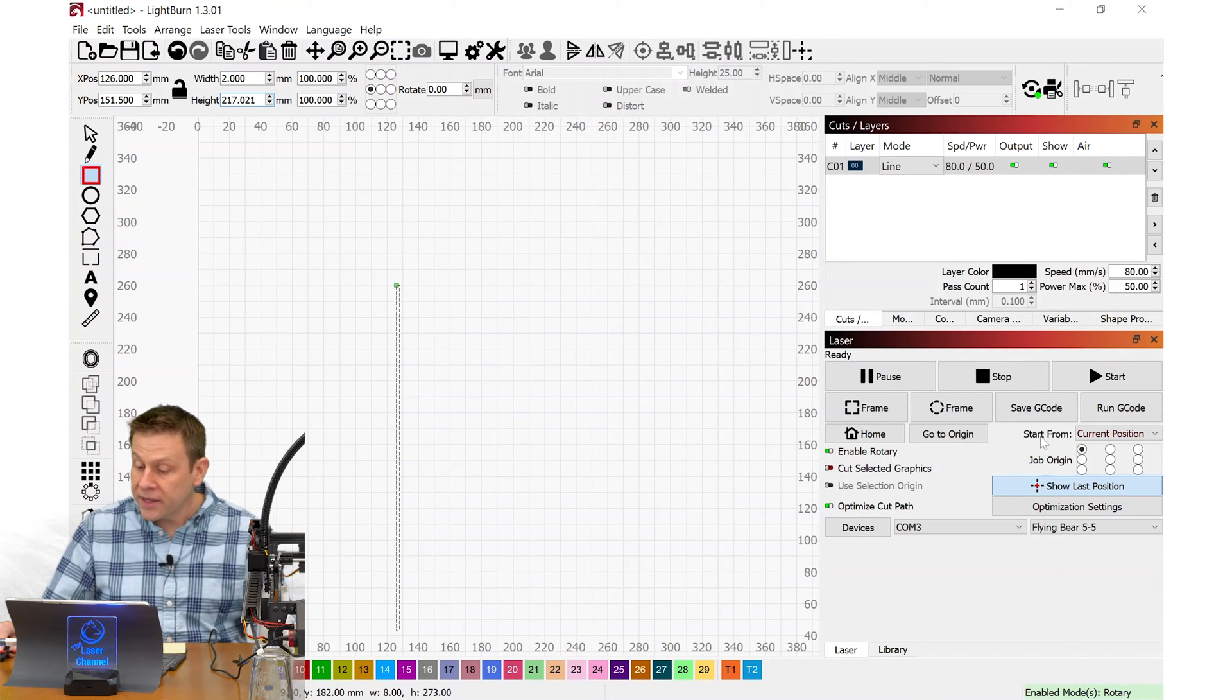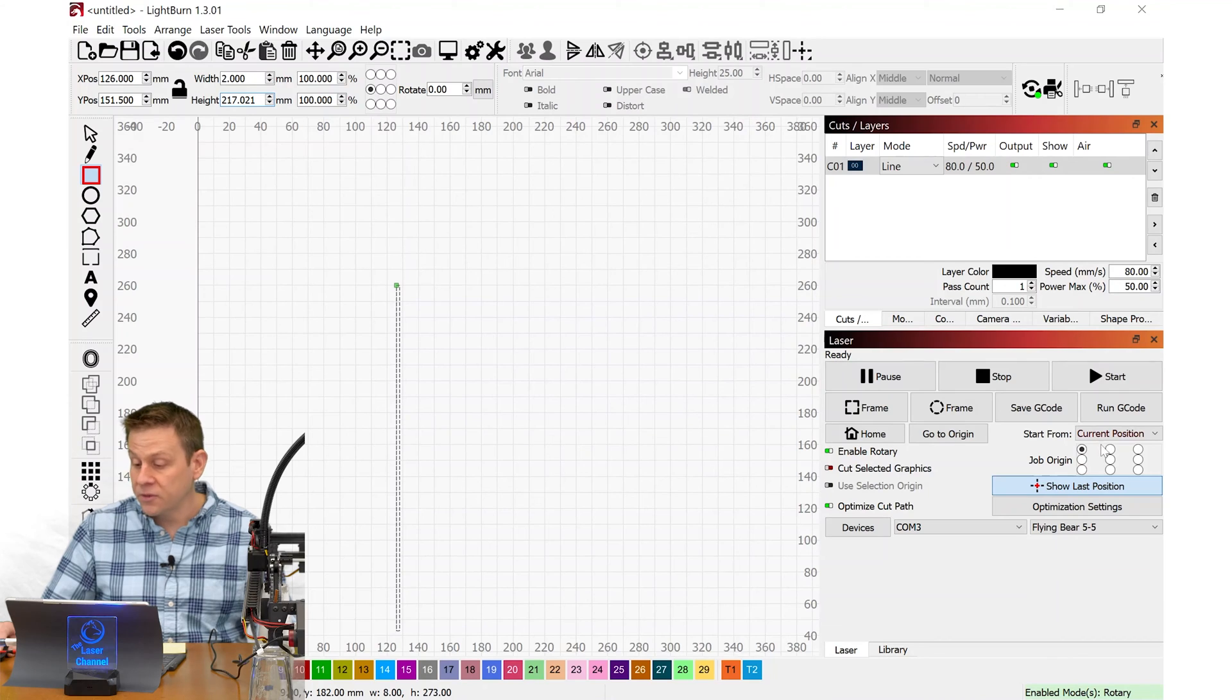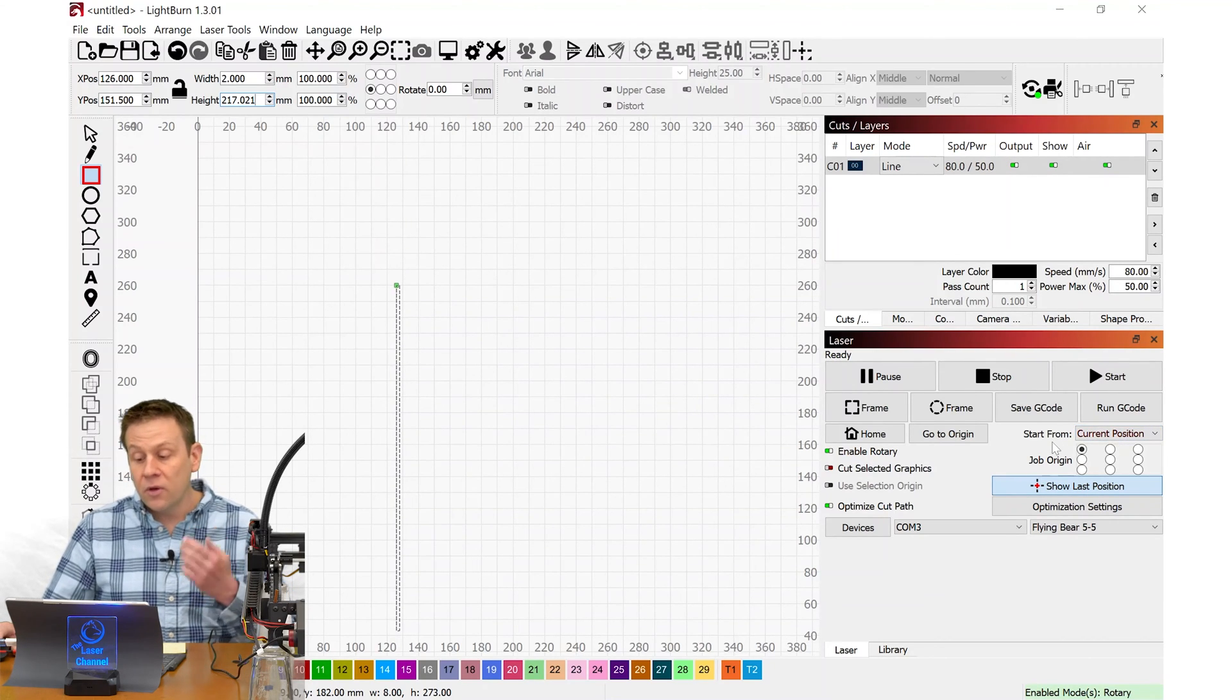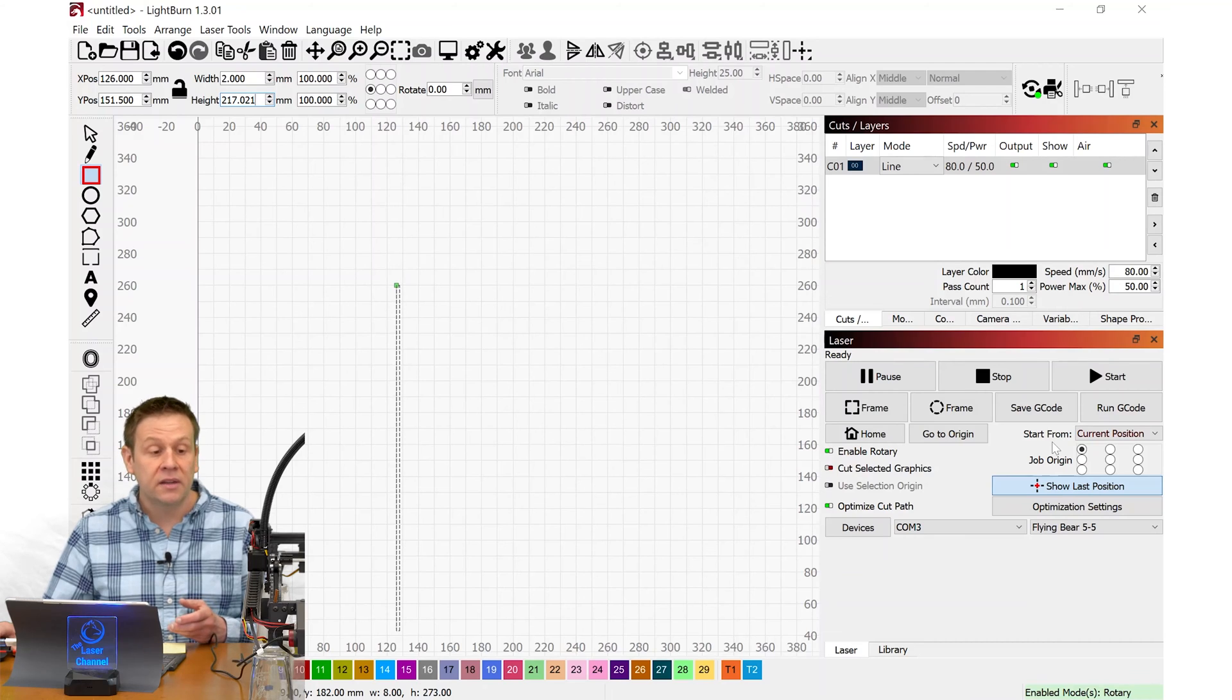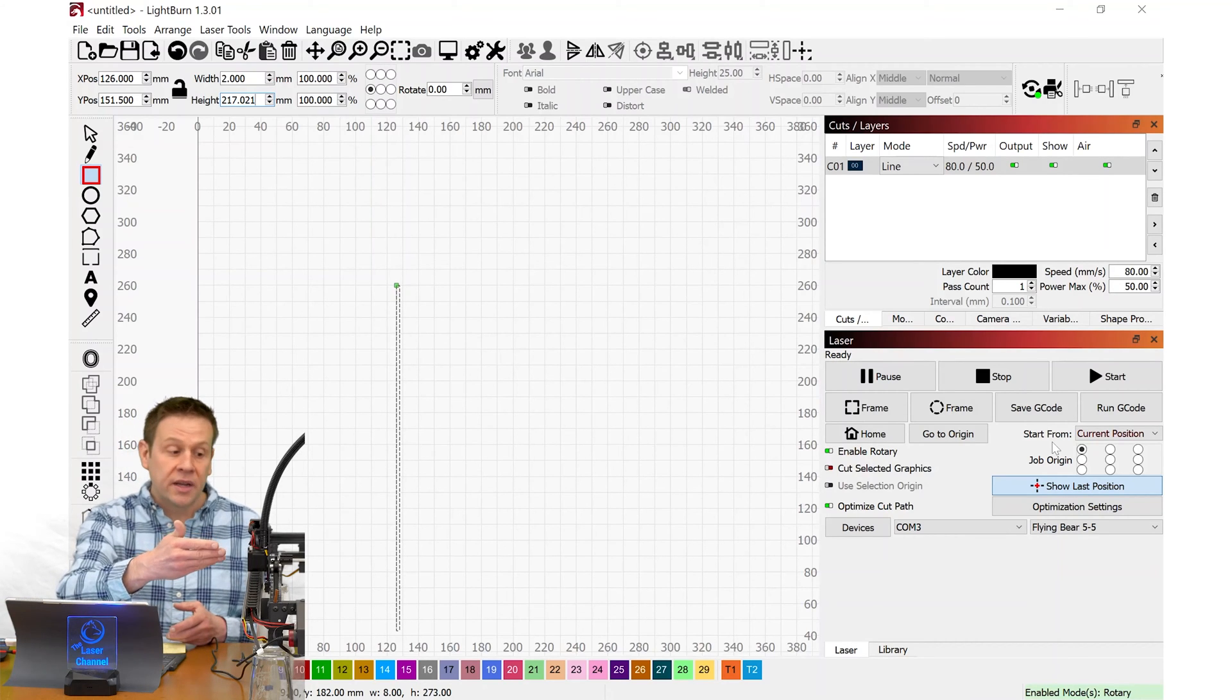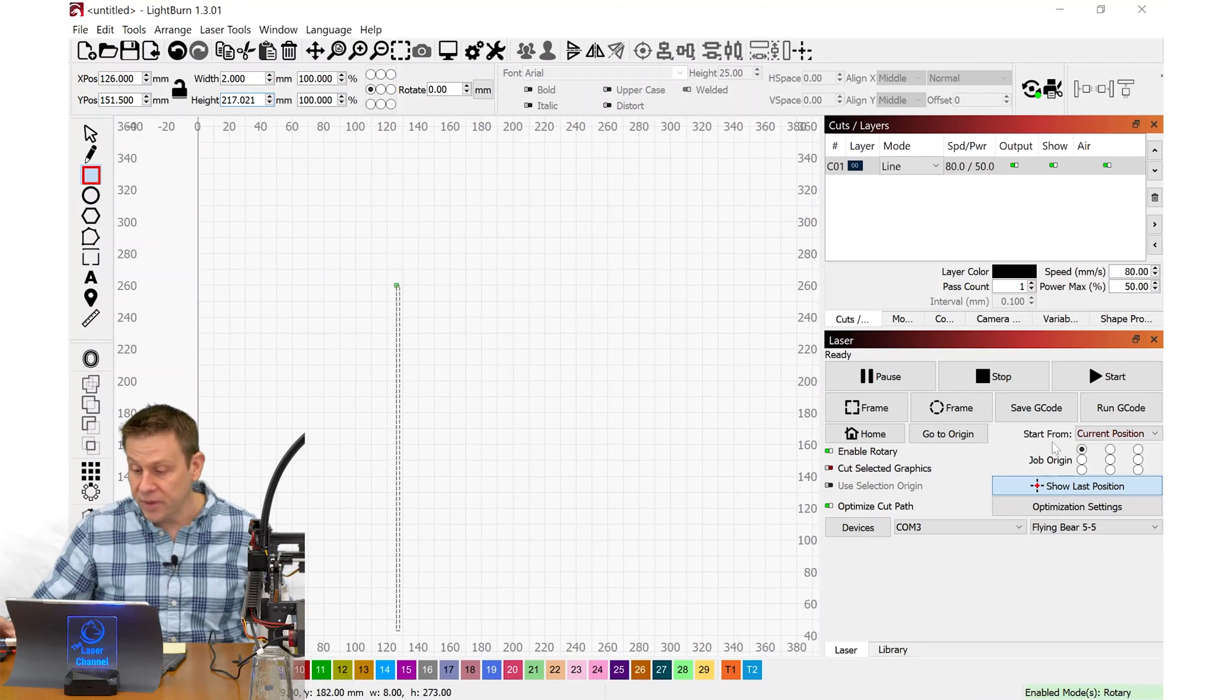For the next part, I want to make sure that my start from is from the current position because we will not be able to home the machine because we disconnected one of the motors on the machine so that we could plug in the rotary attachment.